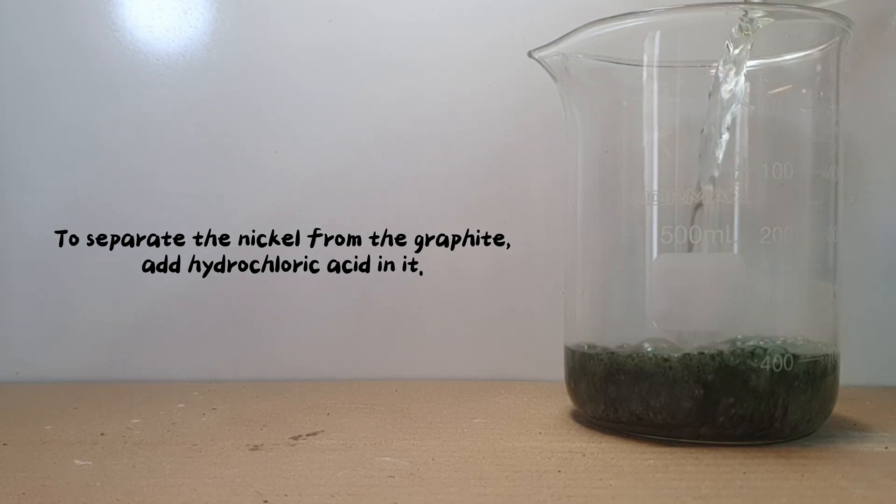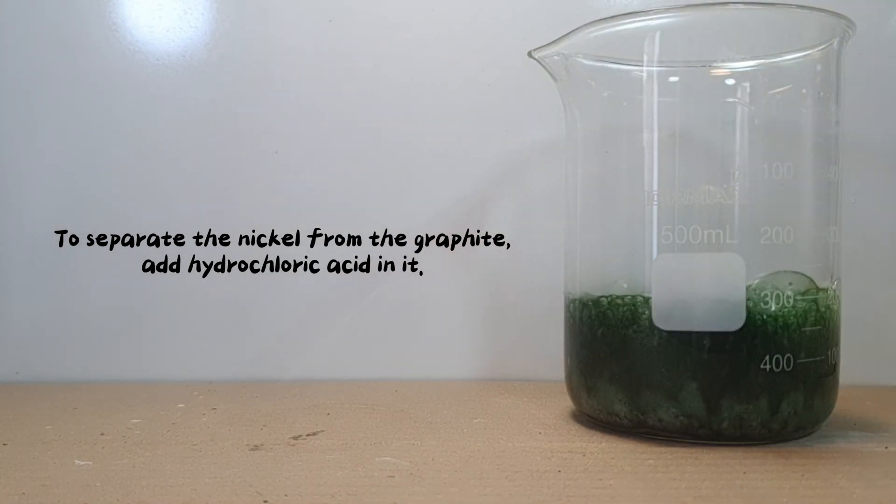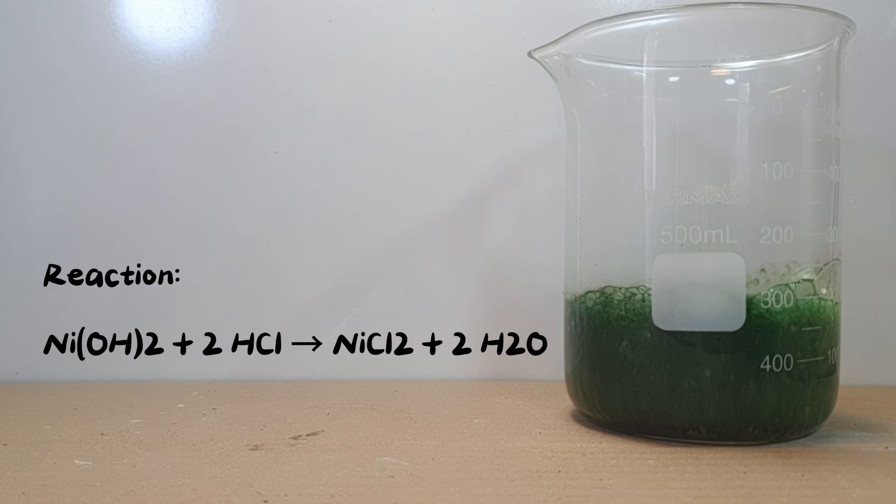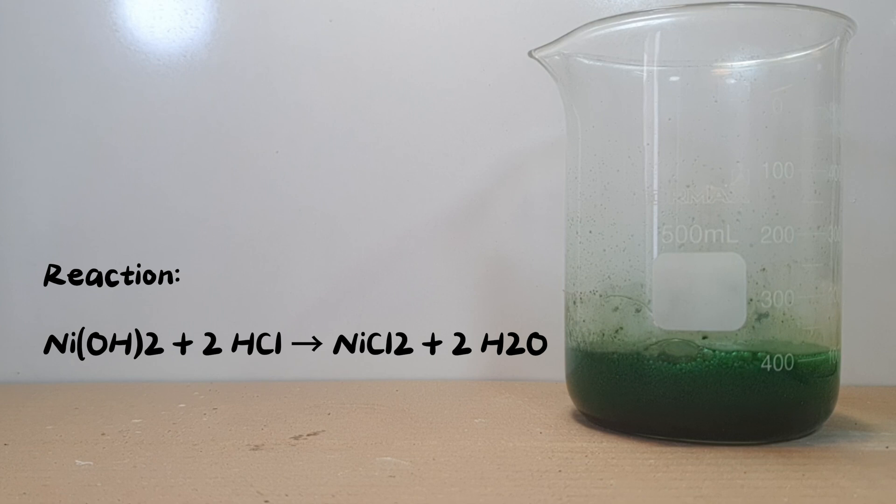To separate the nickel from the graphite, add hydrochloric acid in it. Nickel hydroxide reacts with hydrochloric acid to form nickel chloride and water, while graphite does not react with the acid and remains unchanged. This allows the separation of nickel from graphite.